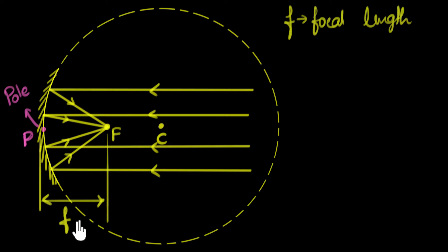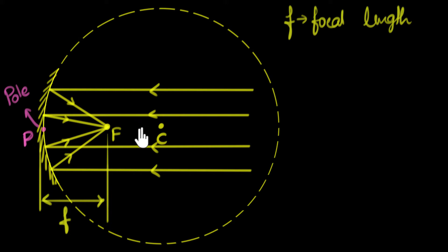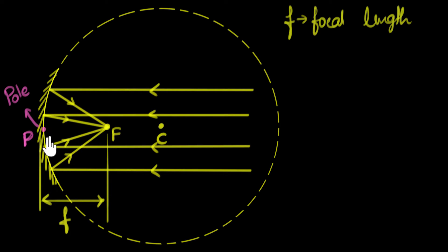Focal length is an important number, and we would like to know it because if we want to use this mirror for anything, we need to know exactly where the rays of light would get focused. We can figure out the focal length by doing some math and using the rules of reflection — some geometry and some approximations. If we do all of that, it turns out that the focus F lies pretty much halfway between the pole and the center of the sphere. So the focal length is pretty much half the radius of the sphere.